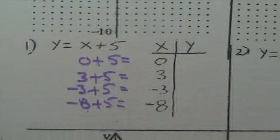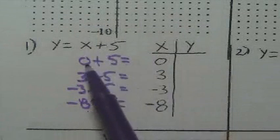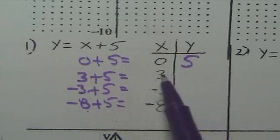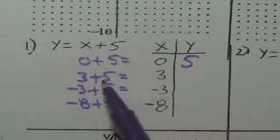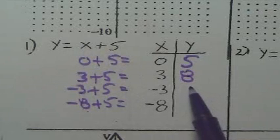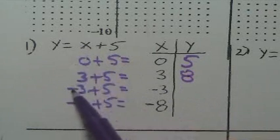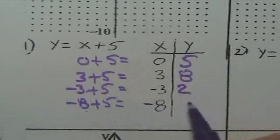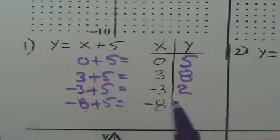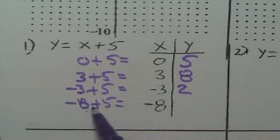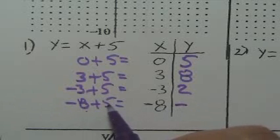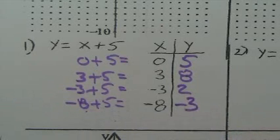Some of this you do mentally, but I'm asking that you write this out, at least for this problem with me. So on the first one: 0 plus 5 — if x is 0, y is equal to 5. If you put 3 for x, 3 plus 5 is 8. If you put negative 3 for x, negative 3 plus 5 is 2. If I put negative 8 for x, that's negative 8 plus 5 — 8 take away 5 is 3, and there's more negative, so negative 3.